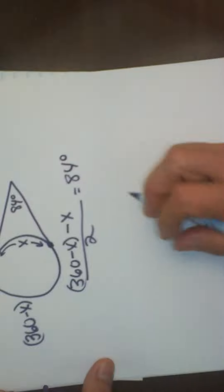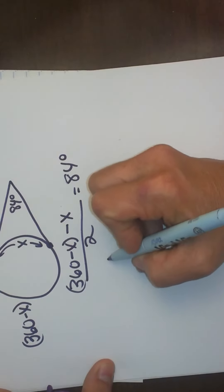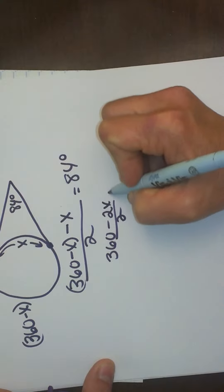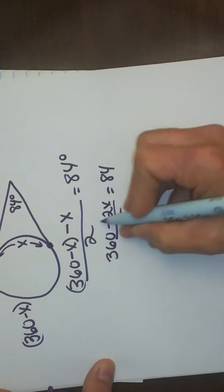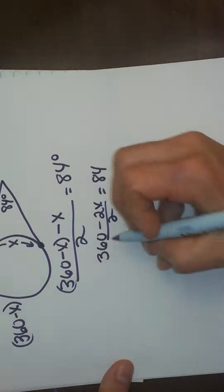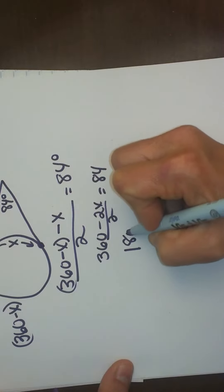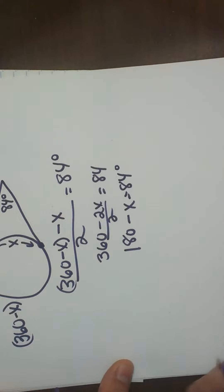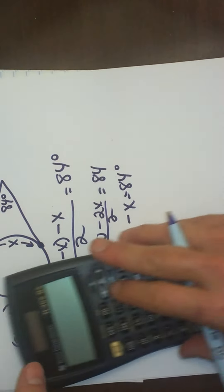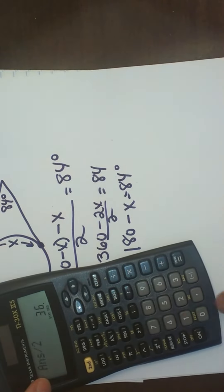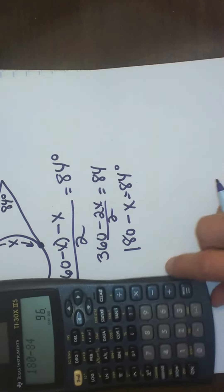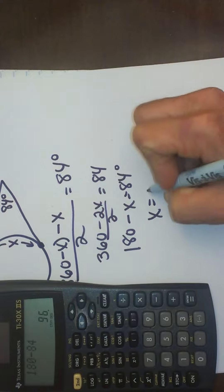Now we just need to do some algebra to clean it up. So that gives me 360 minus 2x all over 2 is equal to 84. Since these are both divisible by 2 let's just reduce that to 180 minus x equals 84 and then we can just take 180 and subtract 84 and we get 96. So x is 96.